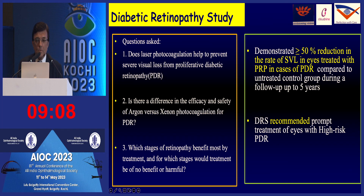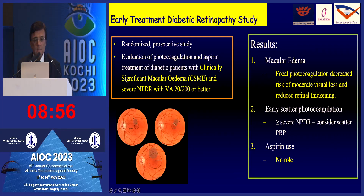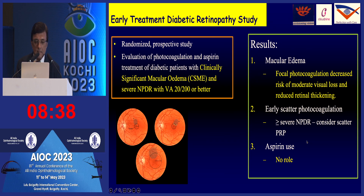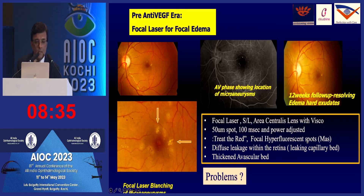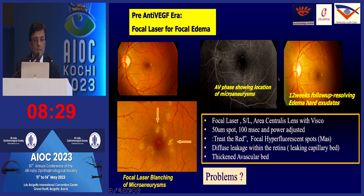The Diabetic Retinopathy Study demonstrated a 50% reduction in the rate of severe visual loss in eyes treated with PRP, and was one of the first multi-center clinical trials in the world. It recommended prompt treatment of eyes with high-risk PDR. The ETDRS then showed that focal photocoagulation decreases the risk of moderate visual loss and reduces retinal thickening, and also showed that scatter PRP can be considered in cases of severe NPDR.